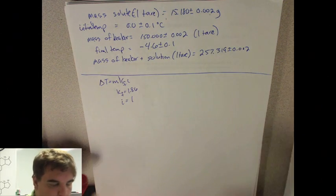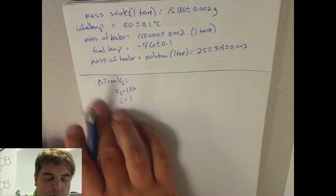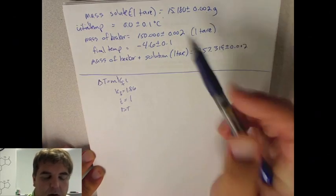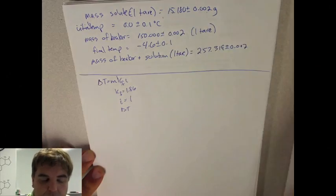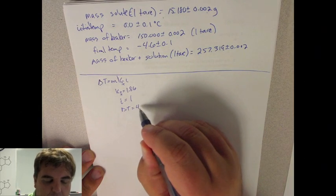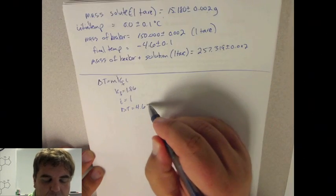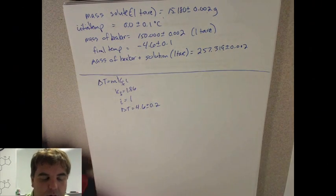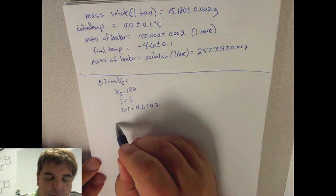So if we start from this equation, first we need to solve for delta T. We need to know what delta T is. We take our numbers. It's an absolute number, so it doesn't have to be negative. So that'll be 4.6, and then the errors on addition and subtraction are added, and so it'll be 4.6 plus or minus 0.2.